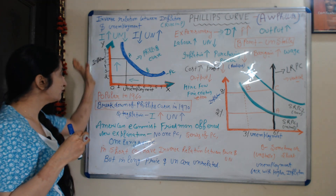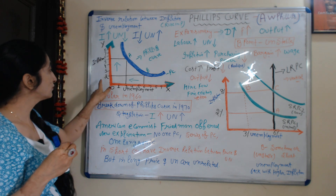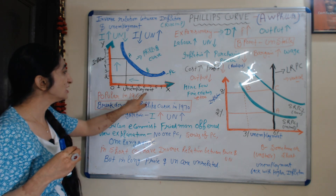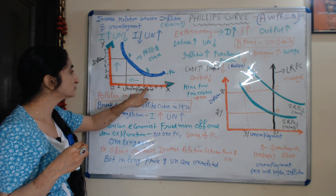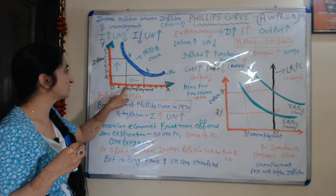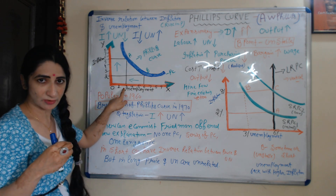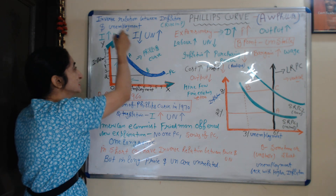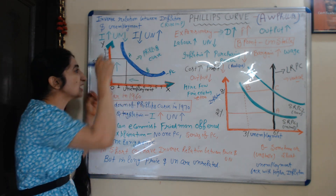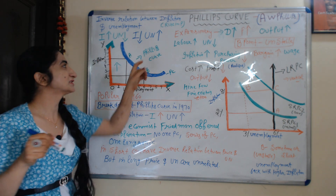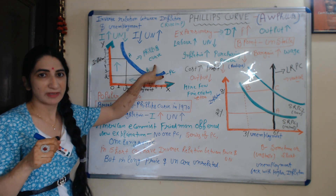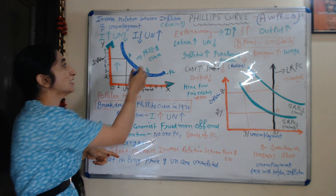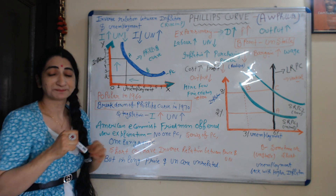As we see, when inflation rises from 2% to 5%, unemployment reduces from 6% to 3%. This blue downward curve is our Phillips Curve.